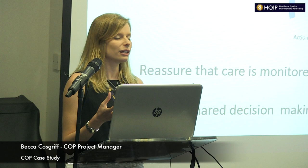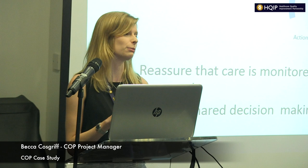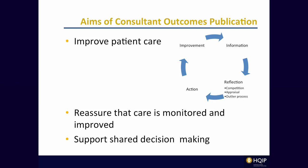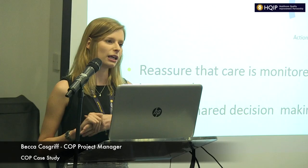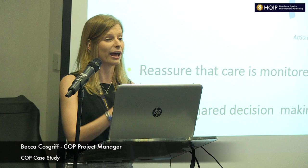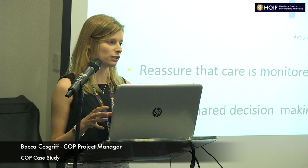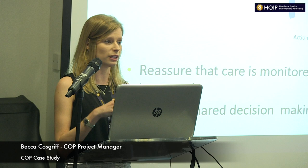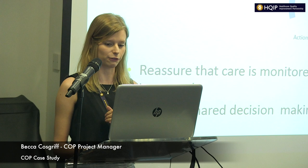If you're going to make your charts or anything you publish really useful for the people you're publishing it for, it's really important to understand why you're doing it and what you're hoping to achieve. In the case of Consultant Outcomes Publication, I've highlighted three key aims. The first is to improve patient care by making information available down to the level of individual consultant, helping practitioners reflect on their practice through accountability, appraisal, and outlier processes leading to action planning and improvement. We also hope to reassure patients that care is being monitored, and to support shared decision-making — giving patients, GPs, and hospital doctors the tools to make informed decisions about their care.